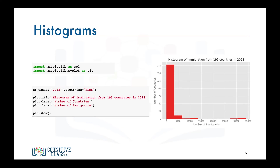But notice how the bins are not aligned with the tick marks on the horizontal axis. This can make the histogram hard to read. So let's try to fix this in order to make our histogram more effective.